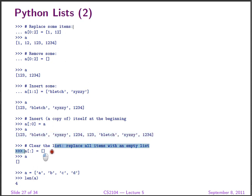We can clear the entire list by not specifying the beginning and end of the range — meaning from the beginning of the list to the end. If we set that range to be the empty list, we effectively clear the list. After that, A becomes the empty list.